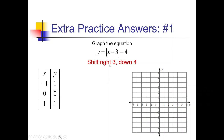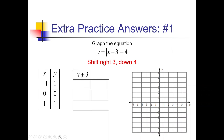If we're shifting right 3, I'm going to be adding 3 to all the x values. And if I'm going down 4, I'm going to do y minus 4. Adding 3: negative 1 plus 3 is 2, 0 plus 3 is 3, and 1 plus 3 is 4. Now subtracting 4 from all y values: 1 minus 4 is negative 3, 0 minus 4 is negative 4, and 1 minus 4 is still negative 3. Graphing these: (2, -3), (3, -4), and (4, -3). Graph the absolute value V through those points and that's it.